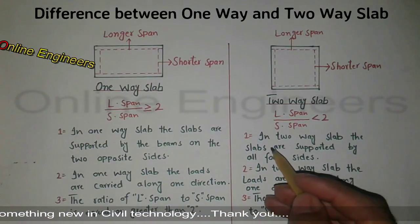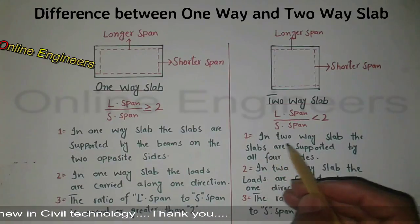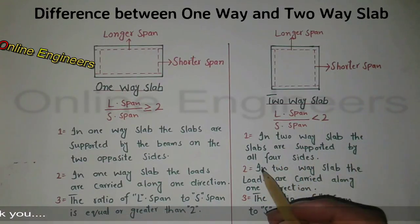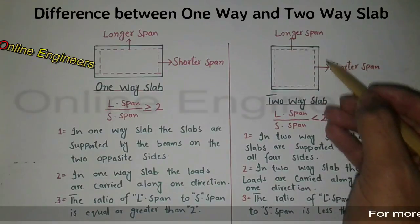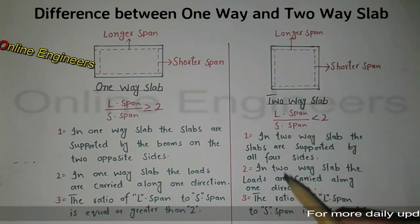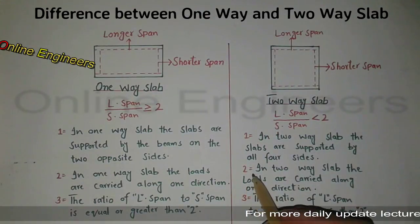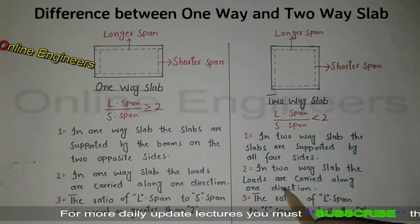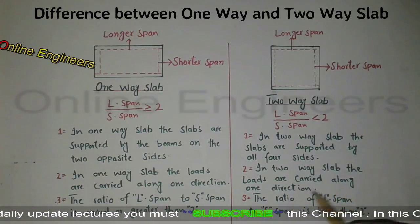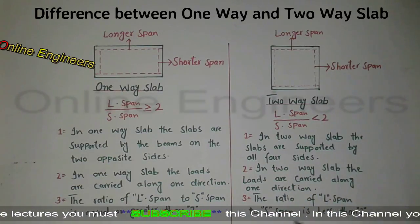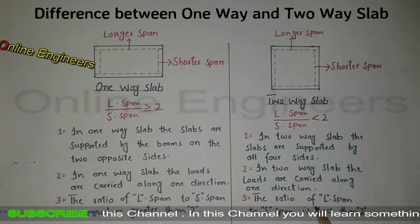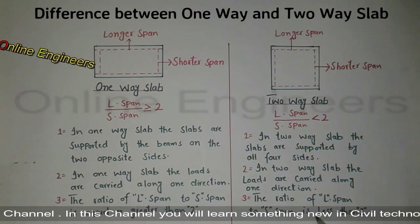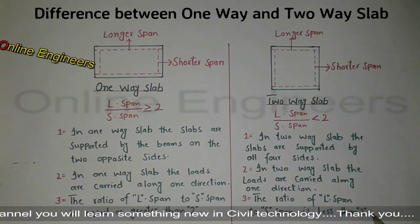In a two-way slab: number one, the slabs are supported by all four sides; number two, the loads are carried along two directions; number three, the ratio of longer span to shorter span is less than 2.